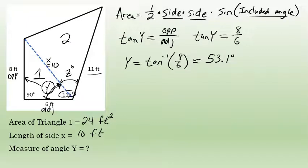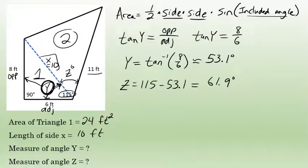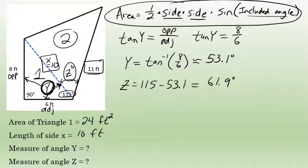If angle y is 53.1 degrees, then angle z will be 115 degrees minus that. Angle z is 115 minus 53.1, and that difference, to the nearest tenth, is 61.9 degrees. So angle z is 61.9 degrees. The information I now have about triangle 2 is: one side of 10, one side of 11, and the included angle between those two sides is 61.9 degrees — which is enough to find the area of triangle 2.